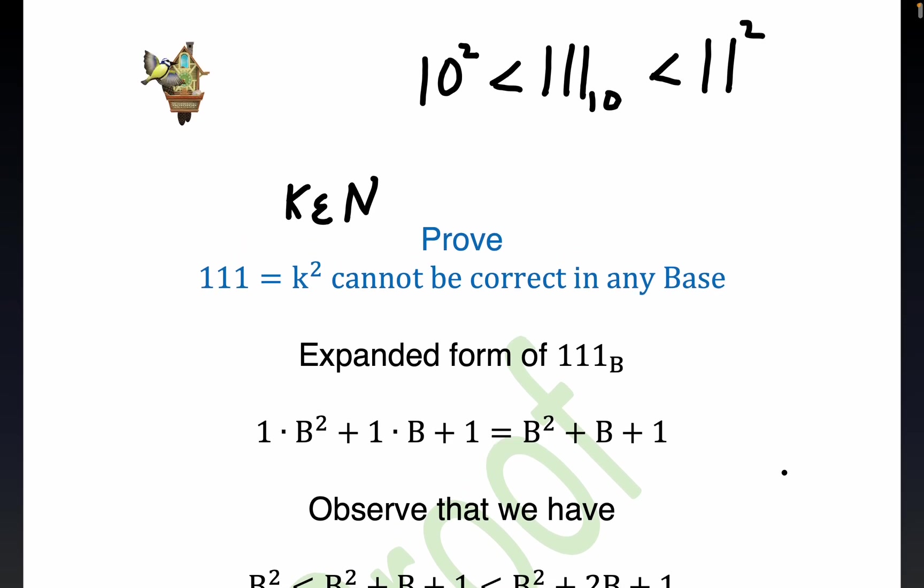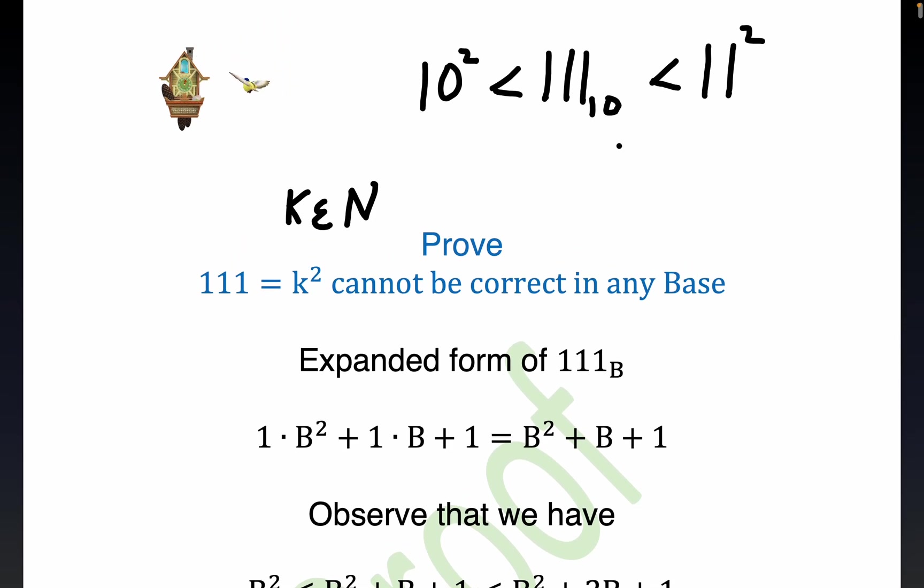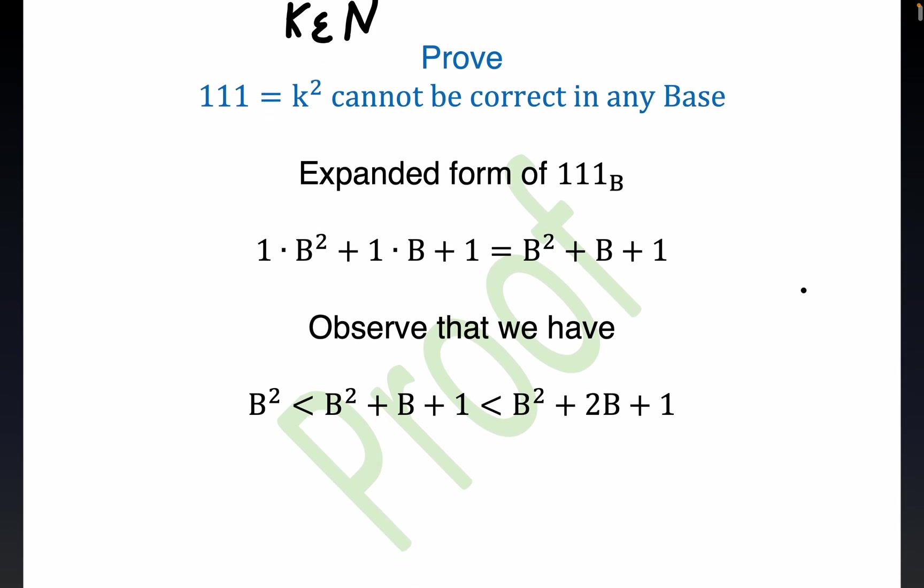Now this is really pretty easy. It's kind of based on the same idea as this special case, but I guess it's more abstract. Notice that our expansion can be written as b squared plus b plus one, which is this right here.